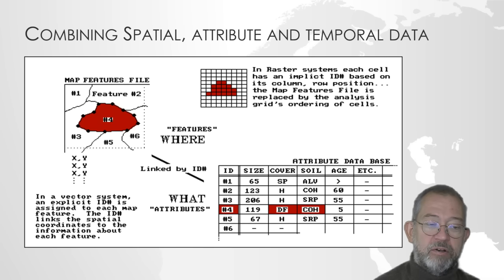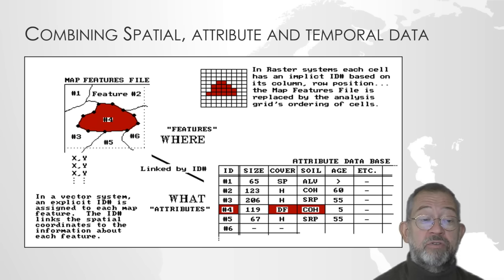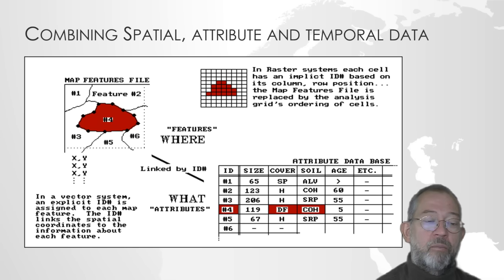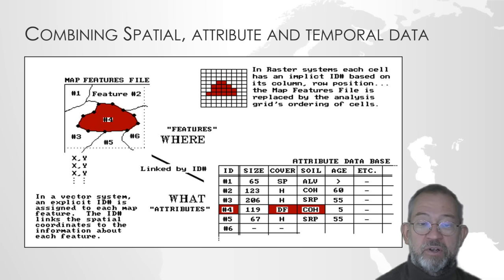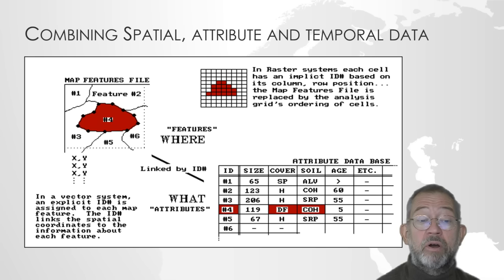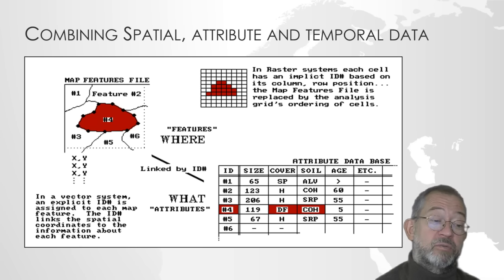We often have the concept of combining our spatial data and our attribute data. In raster data, the attribute data is typically associated directly with individual cells — instead of colour, each cell holds a temperature or elevation value. In vector or object data, we typically have a series of x, y or x, y, z coordinates representing the spatial element, and then a link to a database table describing the attributes, as you might know from Excel. Many software packages hide this link and display it as one row-and-column view with both spatial and attribute data connected.